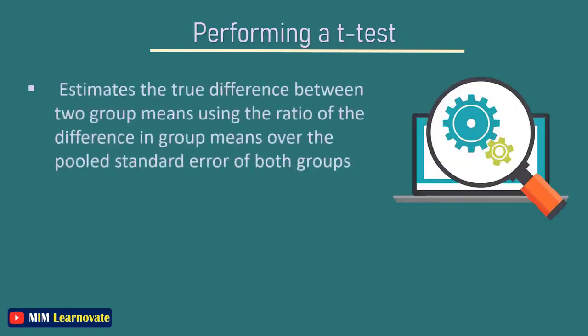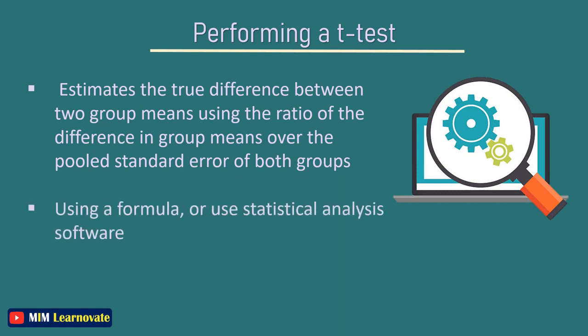Performing a T-test: The T-test estimates the true difference between two group means using the ratio of the difference in group means over the pooled standard error of both groups. You can calculate it manually using a formula or use statistical analysis software.